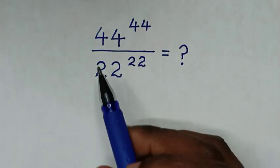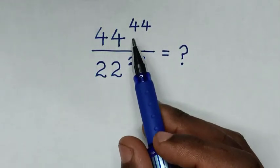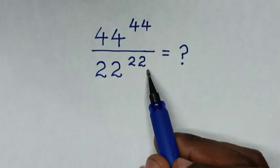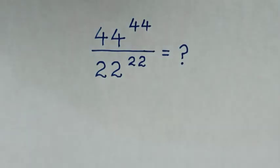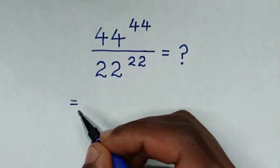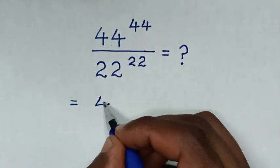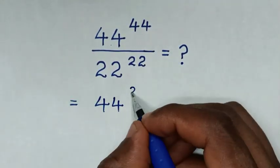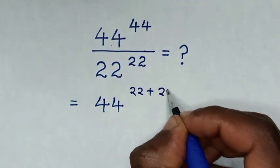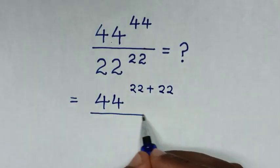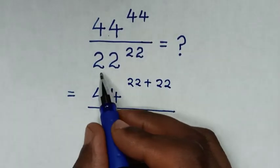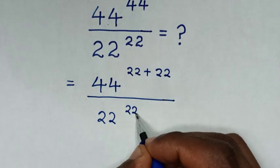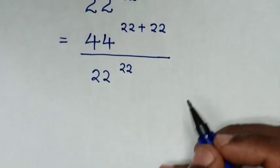Hello. How to solve 44 power of 44 over 22 power of 22. It will be equal to 44 power of 44, which is the same as 22 plus 22, over the denominator 22 power of 22.